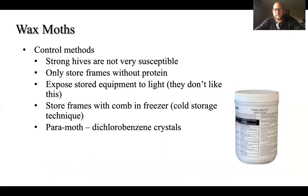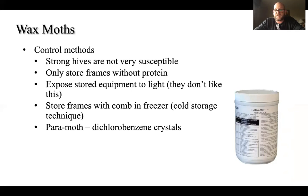Control methods for wax moths: strong hives are generally not very susceptible when active. Only store frames without protein — meaning pollen. Expose your stored equipment to light, since they don't like light. You can store frames with comb in a freezer if they have pollen you want to keep for next season. You can also use Paramoth — an insecticide with dichlorobenzene as the active ingredient — for storing hive bodies.